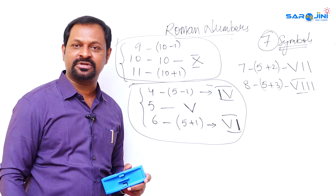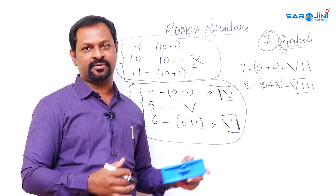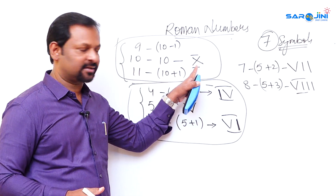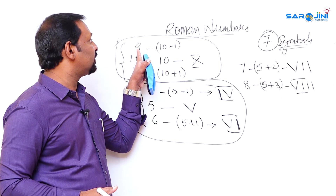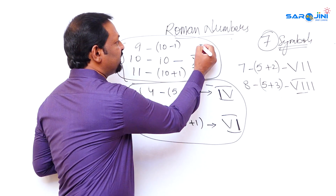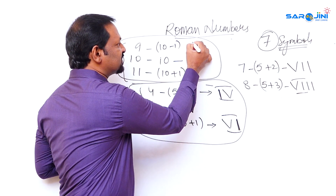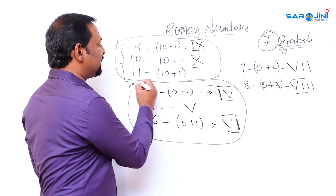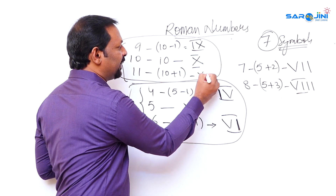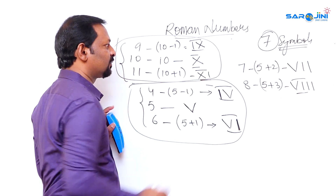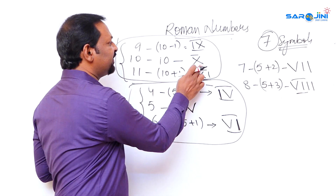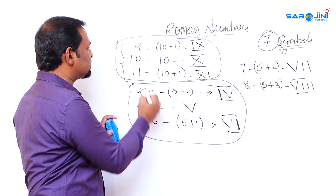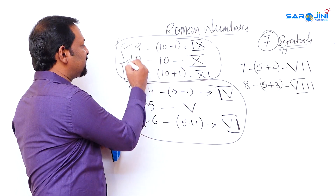If you remember just these two things — that minus goes left and plus goes right — you can write up to thousands of numbers in Roman. Ten is X; nine means ten minus one, so IX; eleven means ten plus one, so XI. The key difference applies consistently throughout the system.